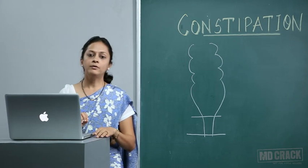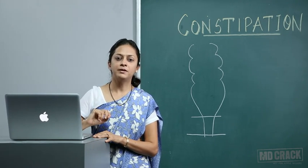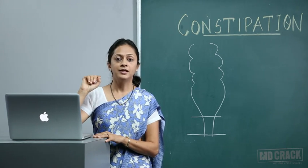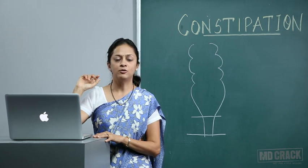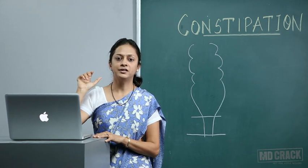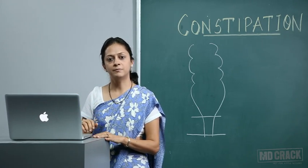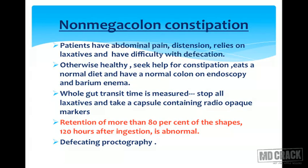Now, non-megacolon constipation: classified as slow transit or normal transit. In slow transit, patients present with abdominal pain, distension, reliance on laxatives, and difficulty with defecation. The patient is otherwise healthy, eats a normal diet, and has a normal colon on endoscopy and barium enema. Whole gut transit time is measured by stopping all laxatives and taking a capsule containing radiopaque markers — retention of more than 80% for more than 120 hours after ingestion is abnormal.